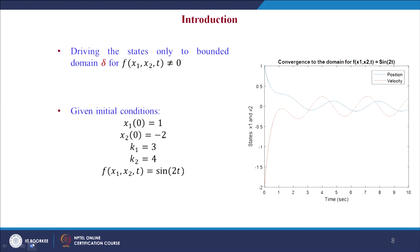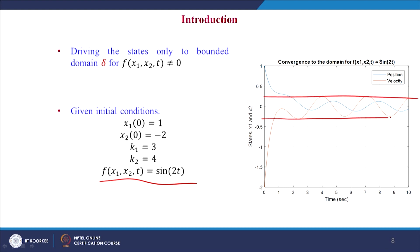When the disturbance F(x₁, x₂, t) is given as sin(2t), the state feedback controller will make the system states stay in the bounded domain δ, which is a function of k₁, k₂, and the bound value L. It is not getting converged; rather, it goes to this domain and stays there.